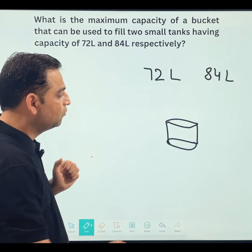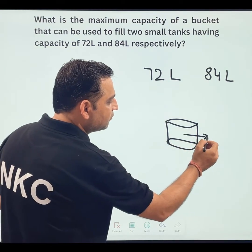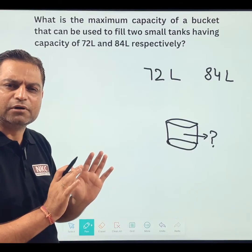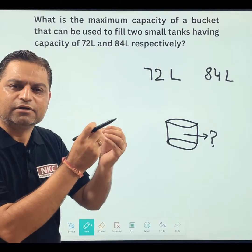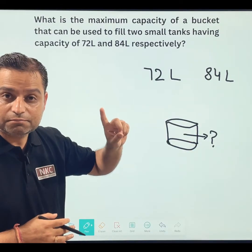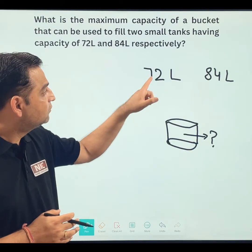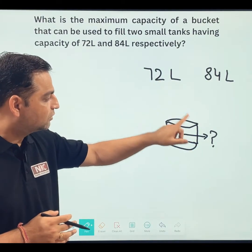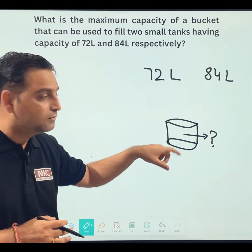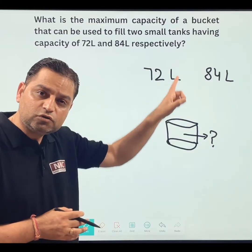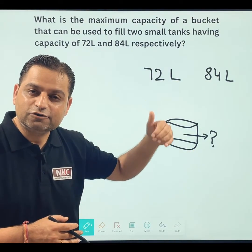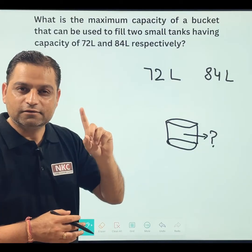Whatever the capacity of this bucket will be, it can be 8, 9, 10, or 11 liters. But that number is very important because 72 must be divisible by this number — only then the number of buckets can be counted. 84 should also be divisible by that number, only then the number of buckets can be counted. This is the first thing.